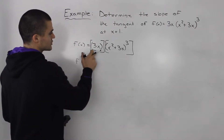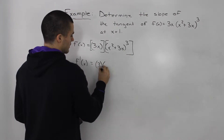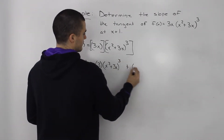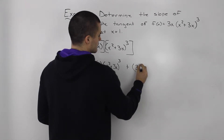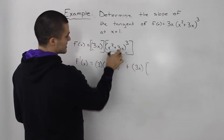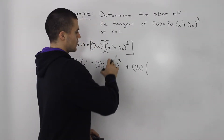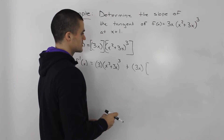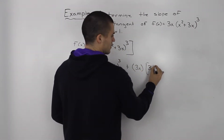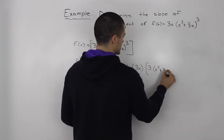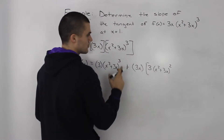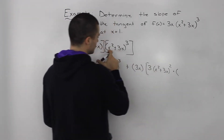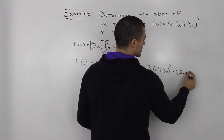Since it's a product of two functions, we're going to have to use the product rule. We take the derivative of the first function, which is just 3, then rewrite the second function as itself. Then we add the first function times the derivative of the second function. For the second function, we use the power of a function rule: bring the 3 down, leave the function in brackets the same, subtract 1 from the exponent (3 minus 1 is 2), and multiply by the derivative of (x² + 3x), which is 2x + 3.